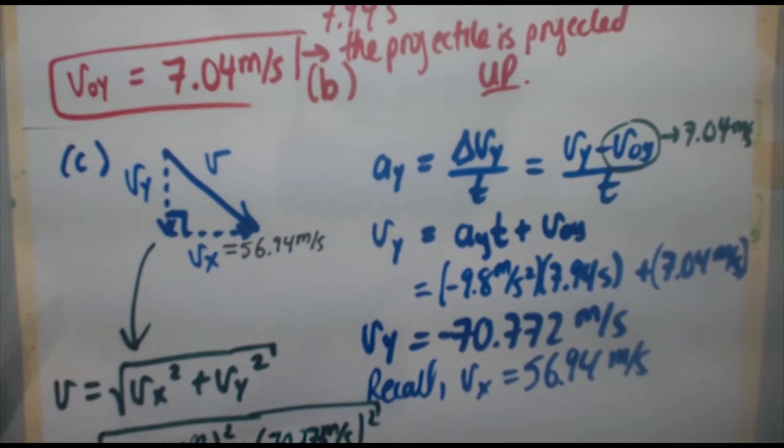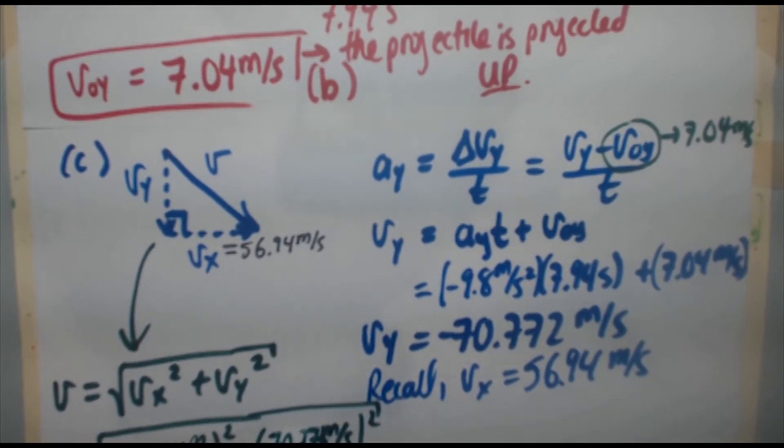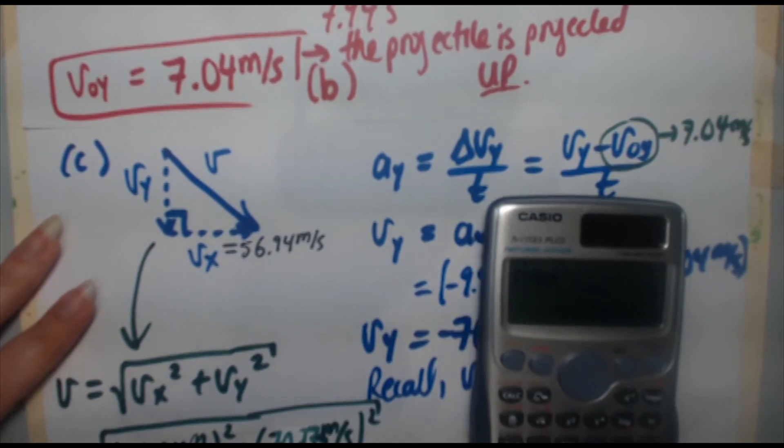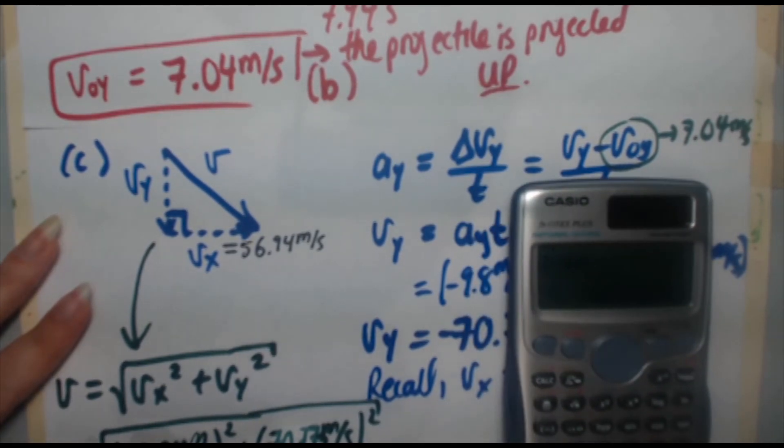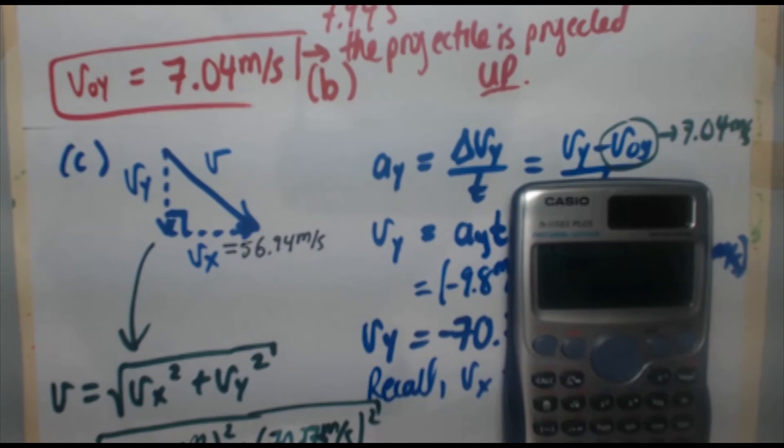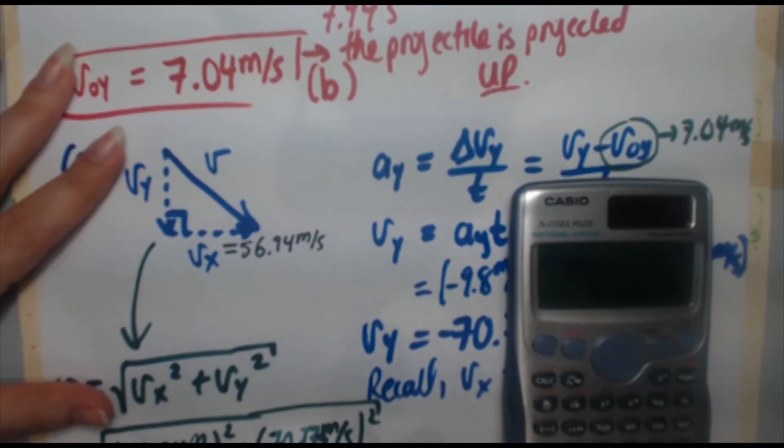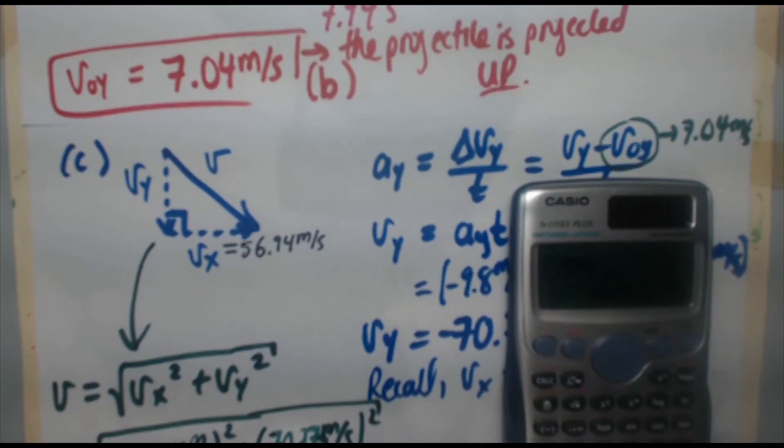There's a 2 there. When we square those two together, let's see what we're getting. 56.94 squared plus 70.772 squared, and we want to take the square root of that expression. And we're going to end up with 90.8 meters per second. So to answer part C, what is the speed with which the supplies land in part B? There's your answer. They land at 90.8 meters per second.